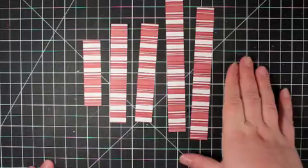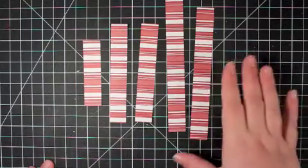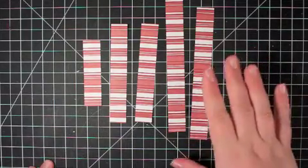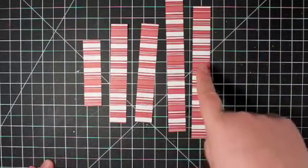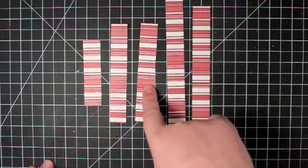So start by cutting up strips of just plain computer paper or scrap paper, construction paper, whatever, and just kind of play with it a little bit. But these for today, for the heart that I'm going to show you today, these are six, four and a half, and three.